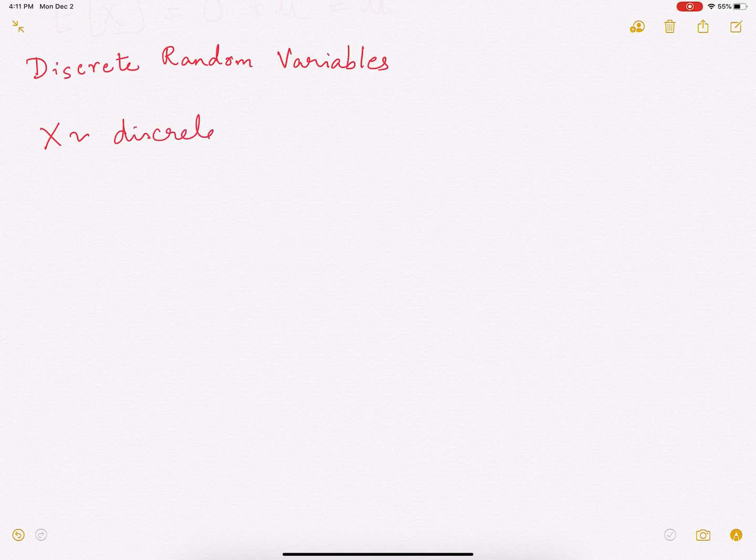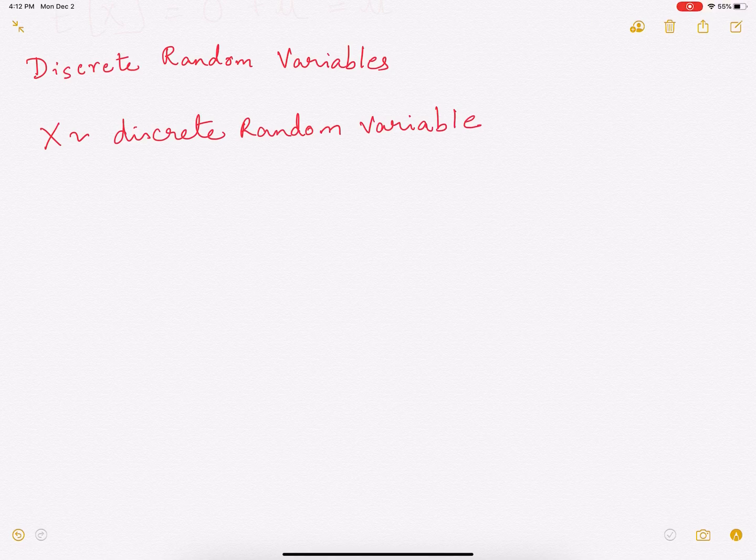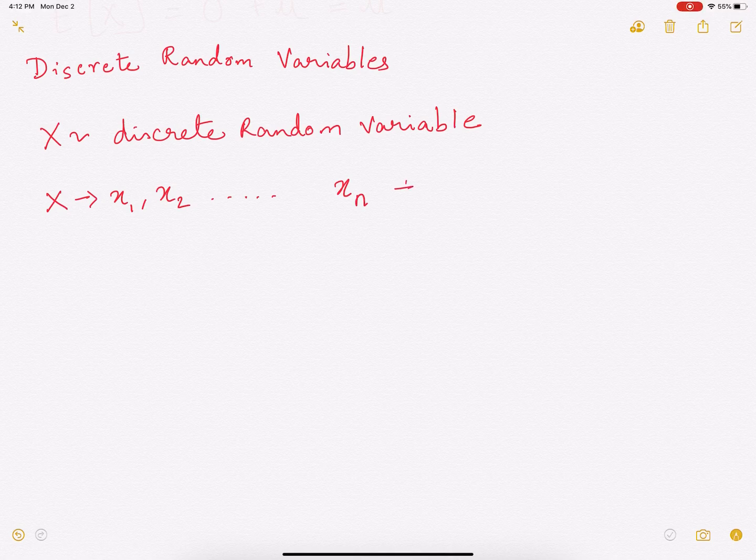So let x be a discrete random variable. And x can only take a countable number of values. So say x can take n values. So x can take values x1, x2, all the way up to xn. So n values.